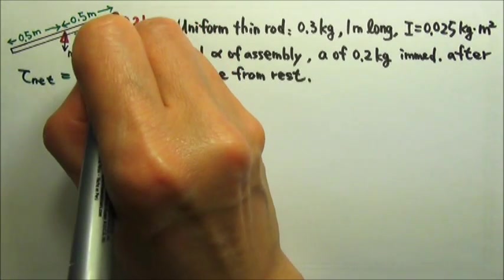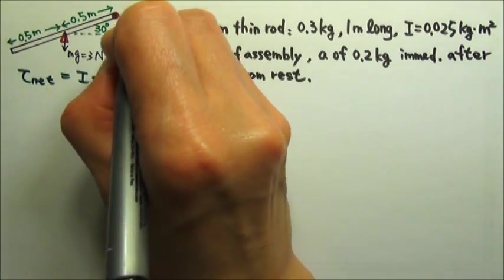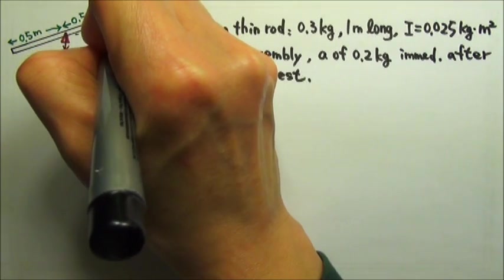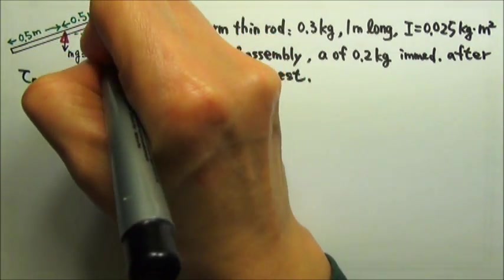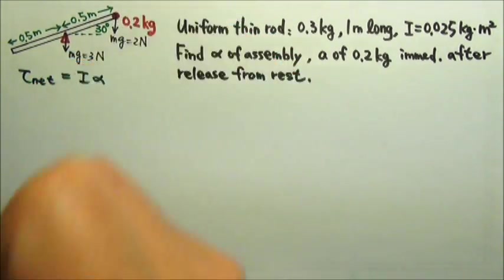For the point mass attached at the end, it's 0.2 kg, so Mg equals 2 newtons acting right there.